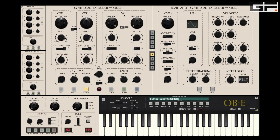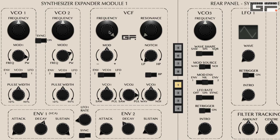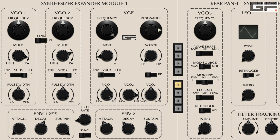The VCF is modelled on the original SEM multi-mode 12 dB per octave filter. As you would expect, we have control over cutoff frequency and resonance. We also have control over modulation via the mod knob, which can be set to either negative or positive values, with the source determined by the switch below. These sources are either envelope 2, VCO3, or LFO1.